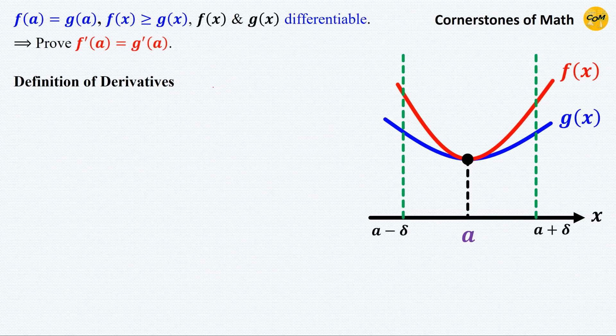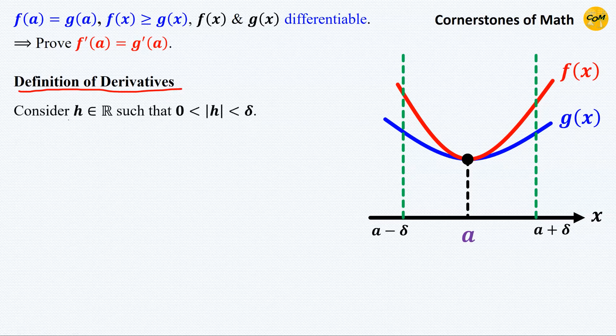So let's solve this, and we have to use the definition of derivatives. Consider a real number h such that the magnitude of h is greater than 0 and less than delta.